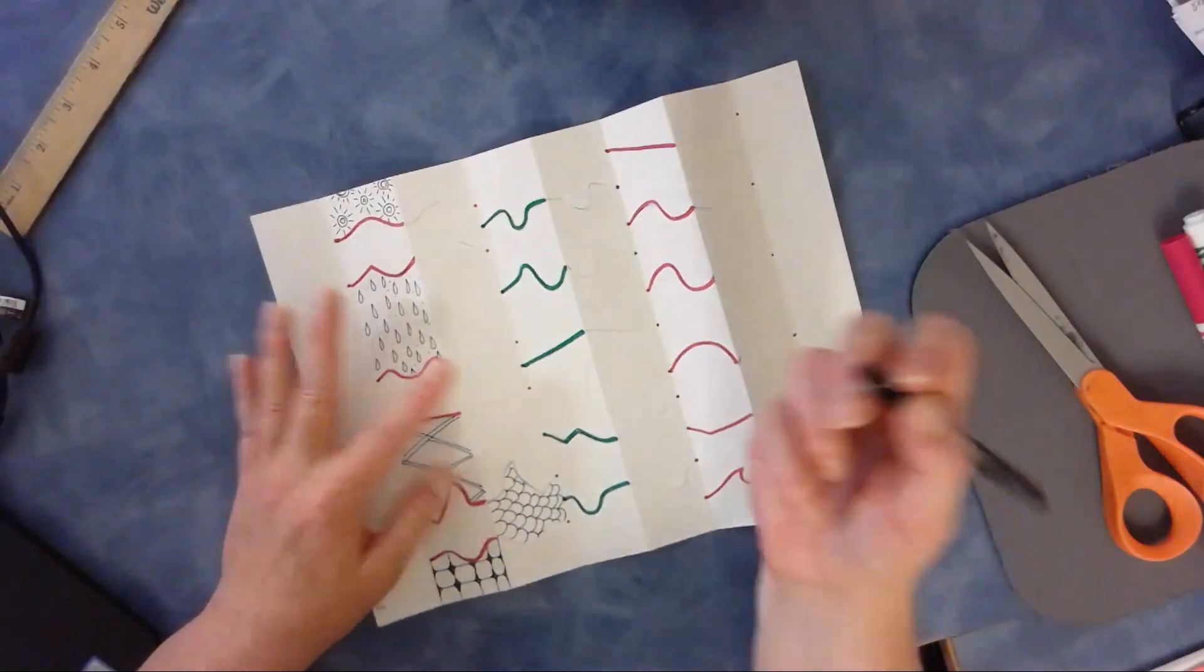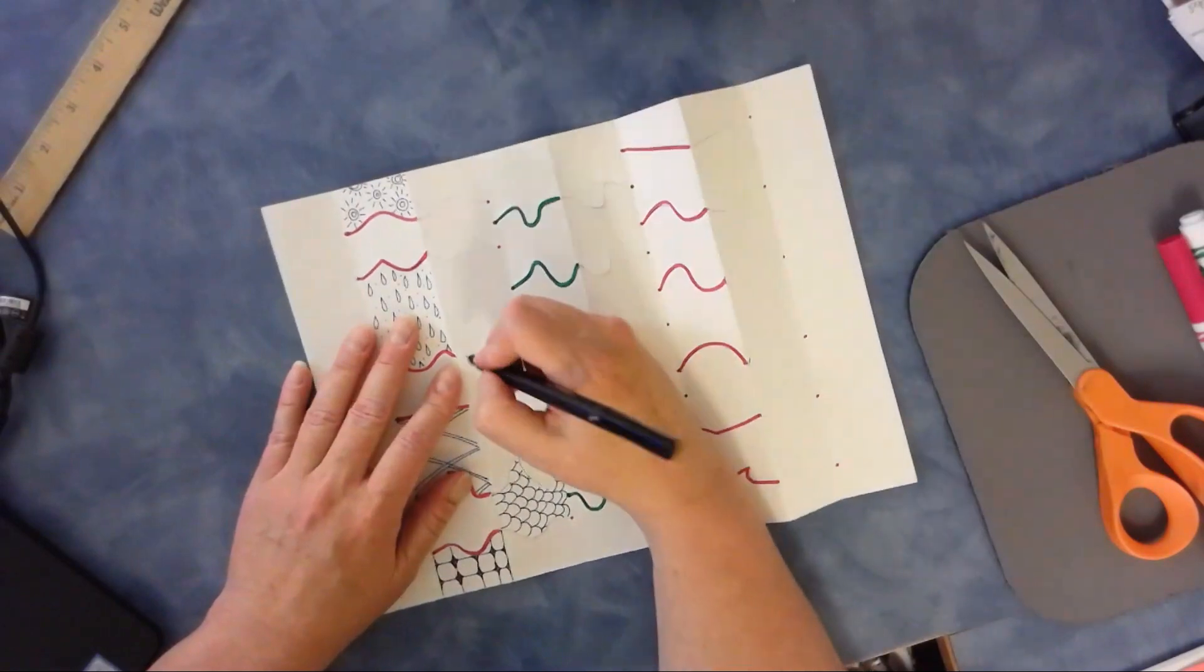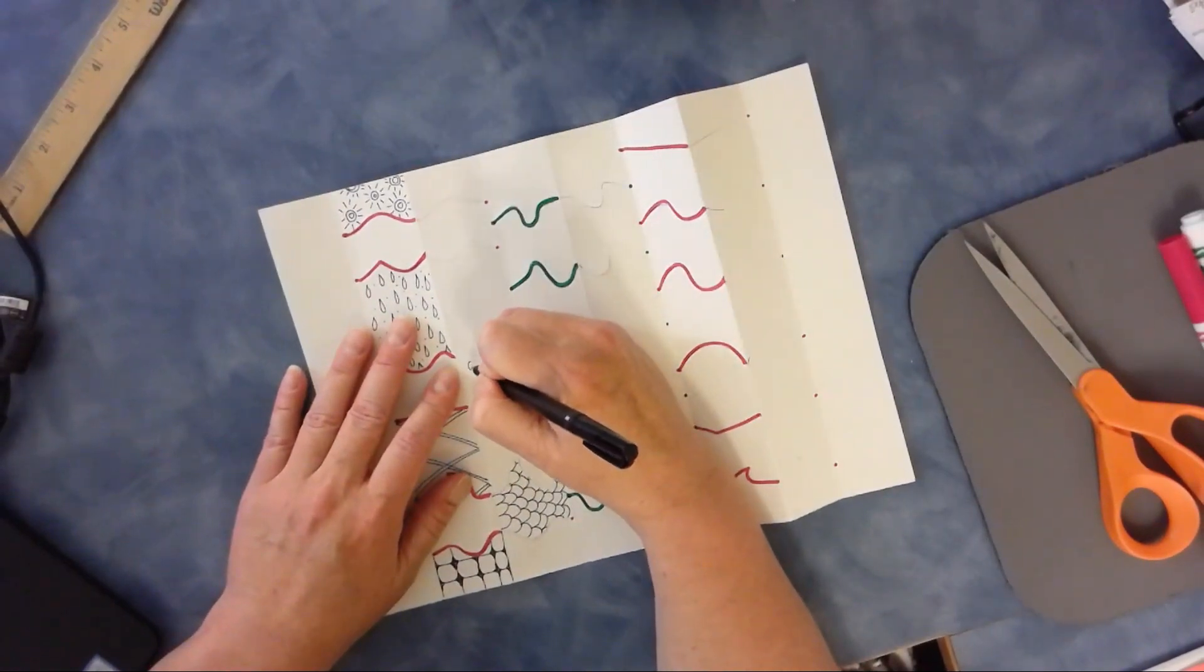And then I'll just continue. So here I'm going to do a pattern based on an insect. And I'm just going to do, I don't know, I thought I was going to do a little bee, but apparently I'm doing an ant. I don't know why.